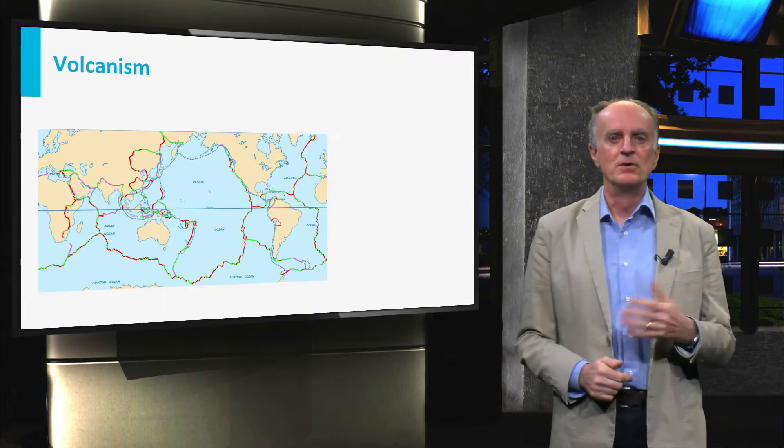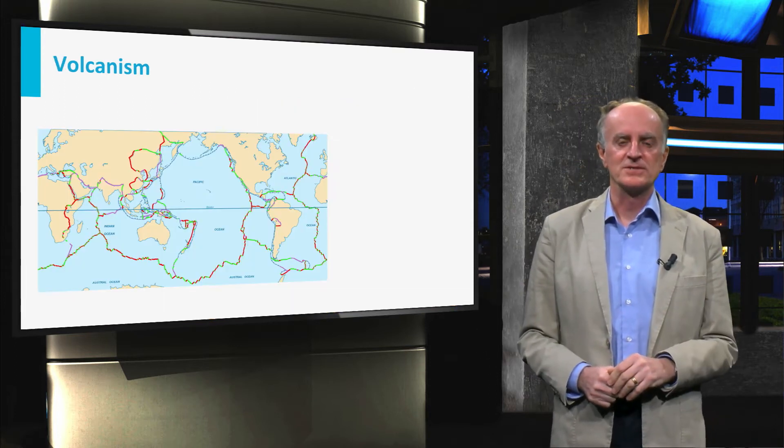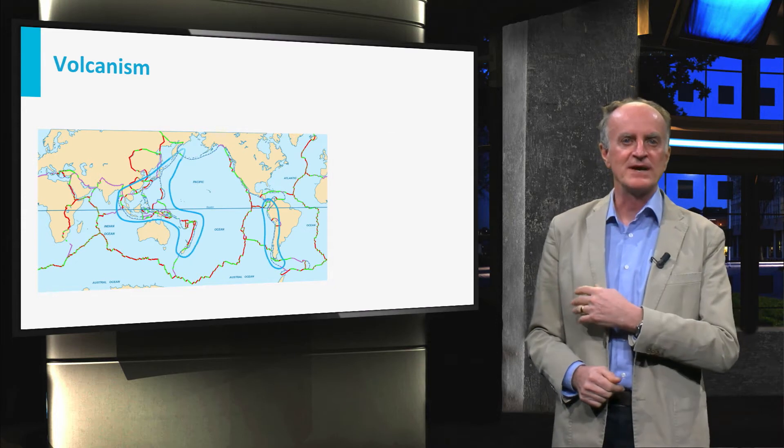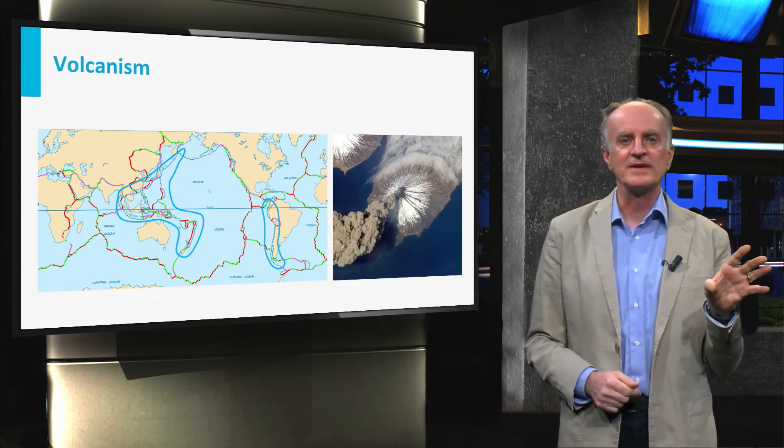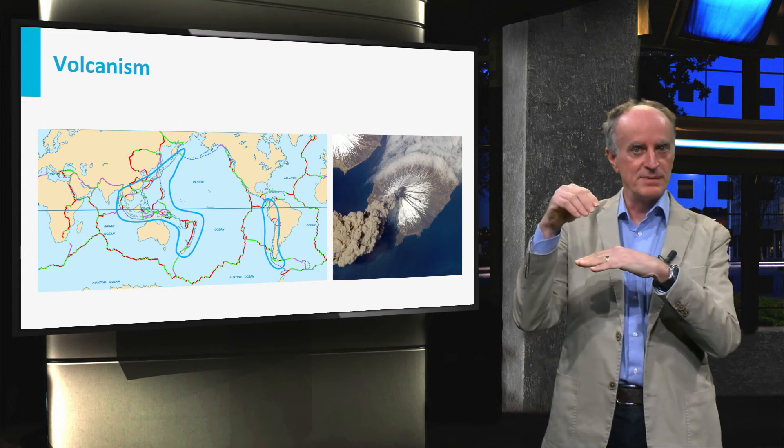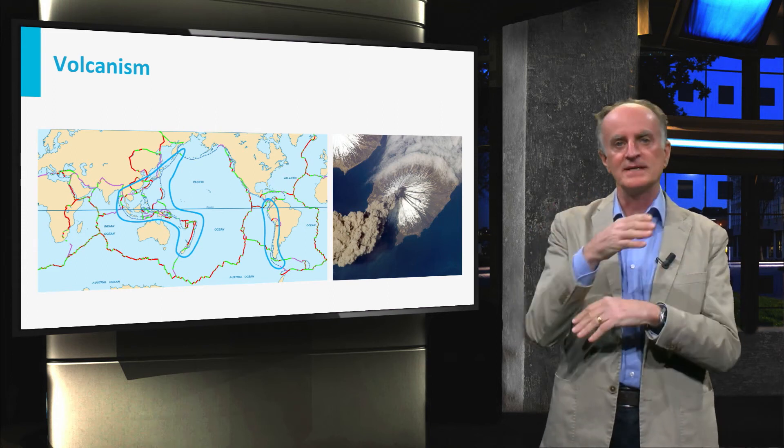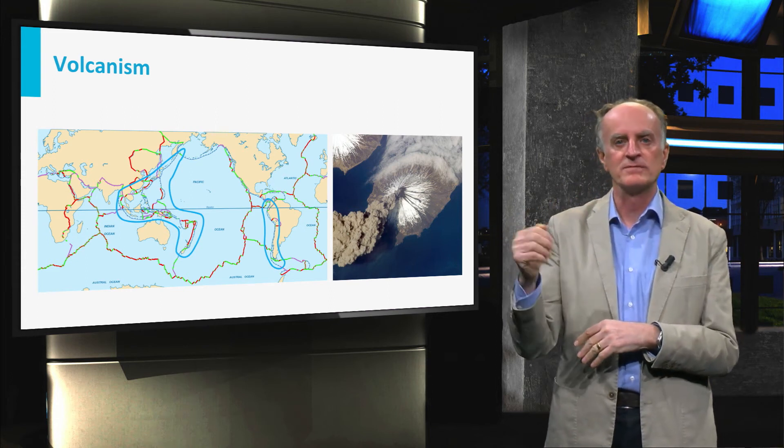Volcanism is one of the most apparent features of subduction zones. Volcanoes are found all along active continental margins and are always located on the upper plate of the subduction zone, tens of kilometers away from the convergent zones.